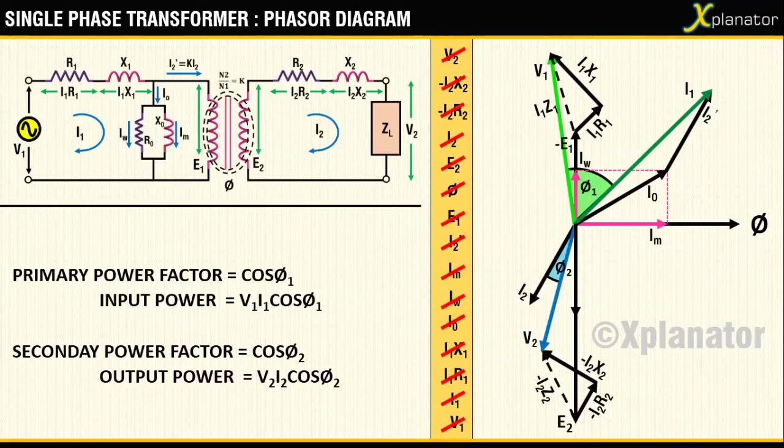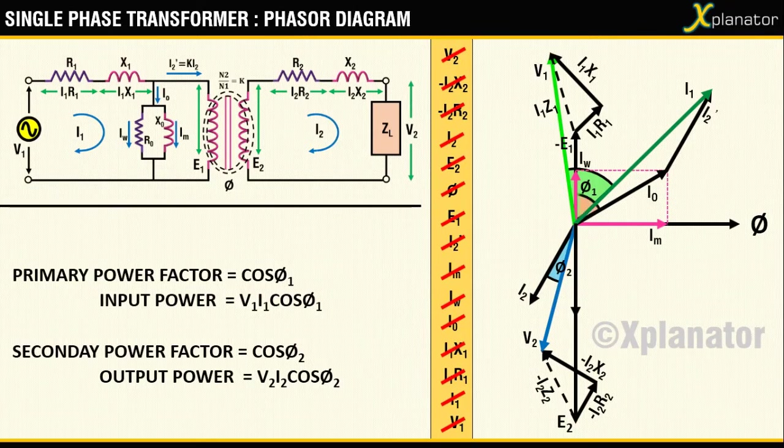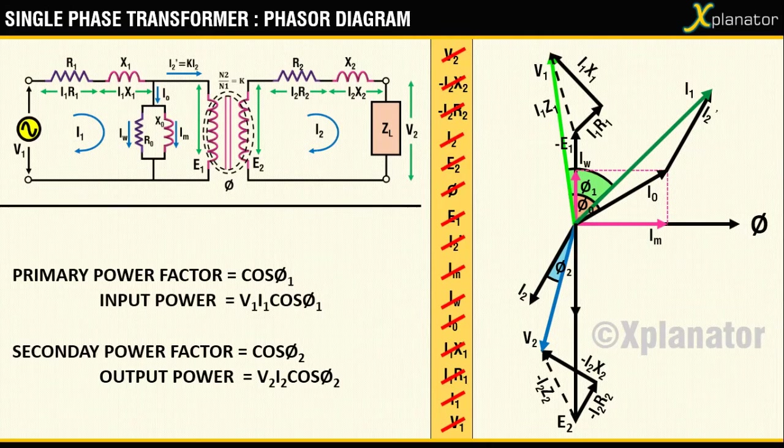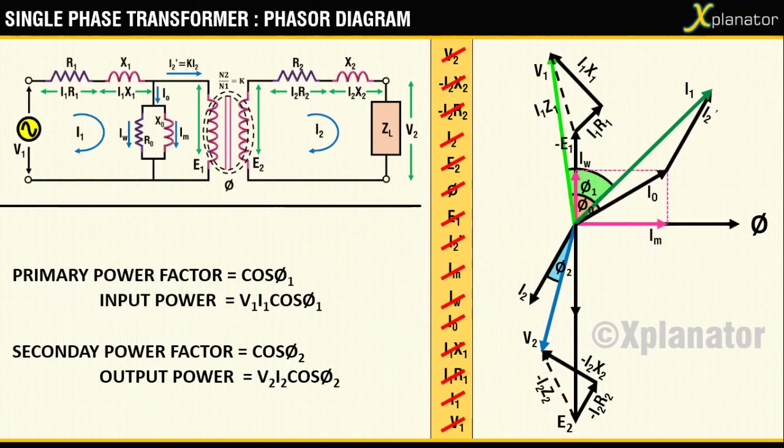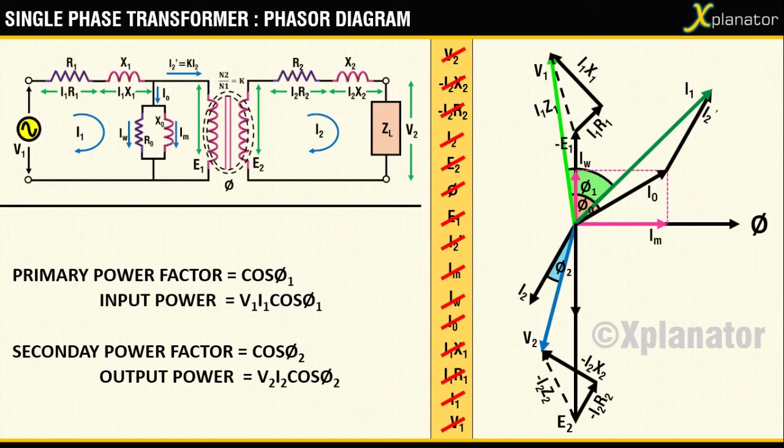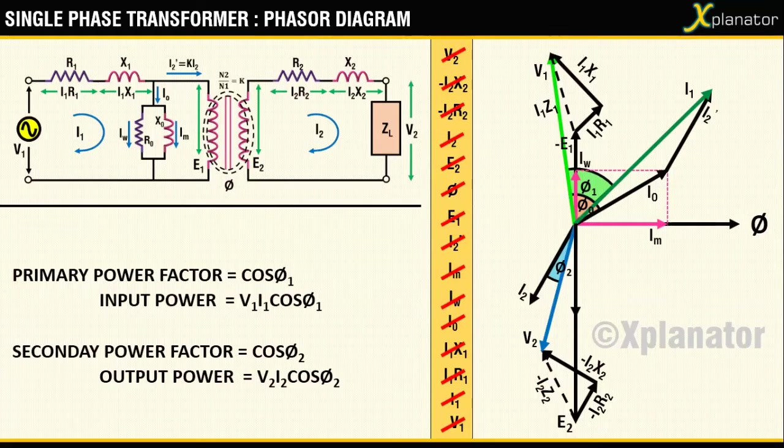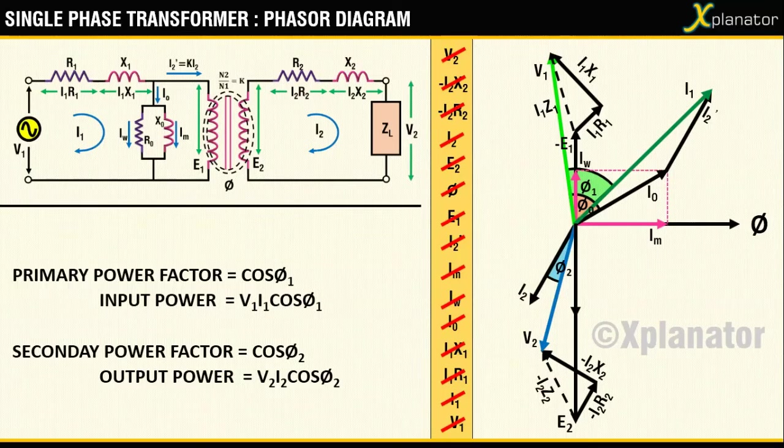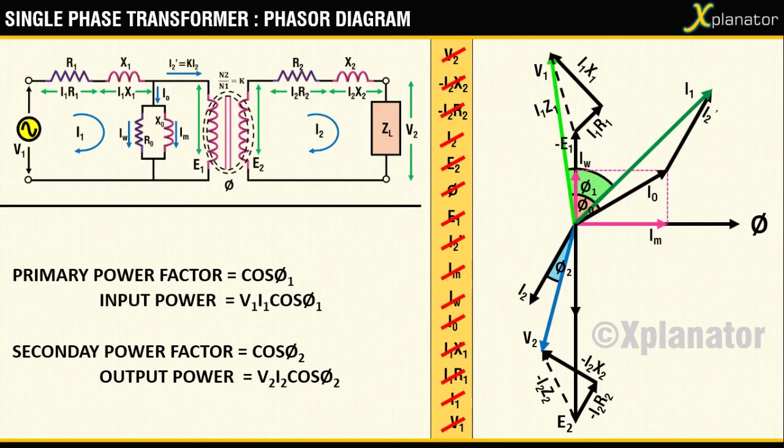The angle between the input voltage V1 and no-load current I0 is phi0. You can clearly see that phi1 and phi2 are not the same, like that in an ideal transformer. And it is also seen that V1 leads I1 and V2 leads I2. Thus, it confirms that the diagram is correct because V1 has to lead I1 in an inductive circuit. This is how you draw a complete phasor diagram for a single-phase transformer on an inductive load.